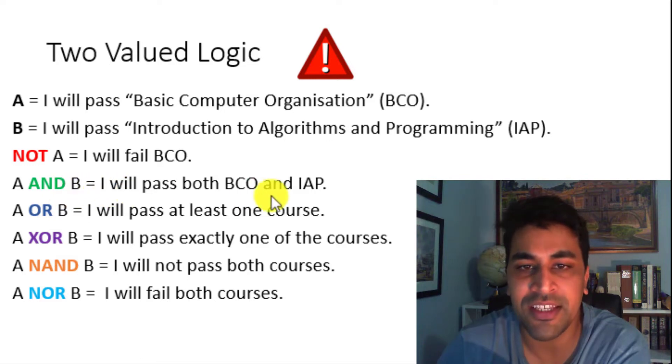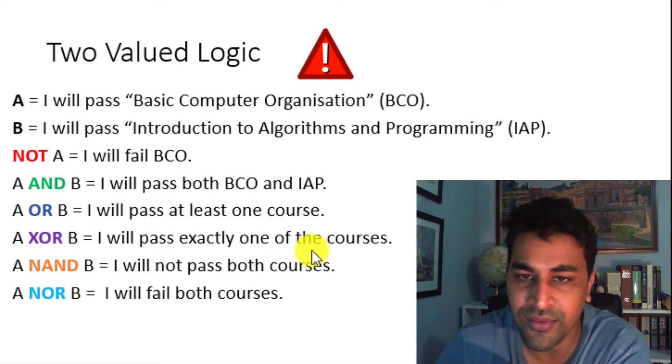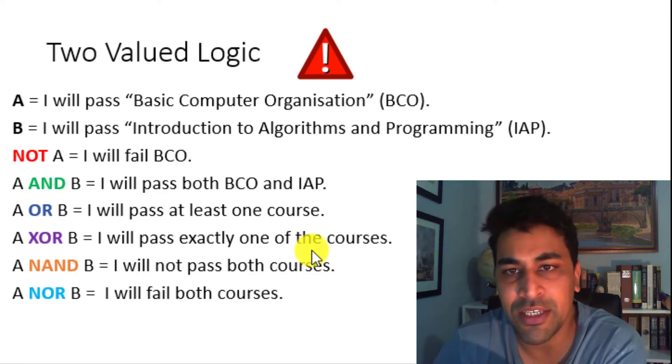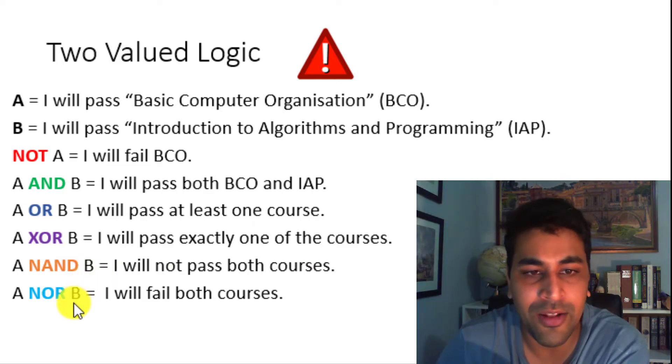A or B would be, I will parse BCO or IAP. A XOR B would be, I will parse BCO or IAP, but not both. A or B would mean, I will parse BCO or IAP.